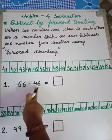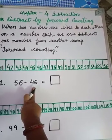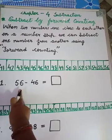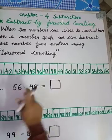What's the rule? We'll start from the smaller number, okay. Starting from 46, we'll go to 56 for subtracting the number. Okay, we'll start from 46, let's see.